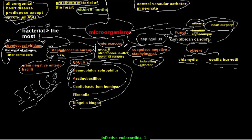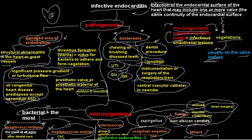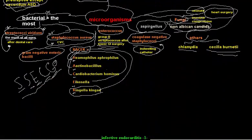To summarize: remember Streptococcus viridans, Staphylococcus aureus, Enterococcus, coagulase-negative staphylococci, gram-negative enteric bacteria, the HACEK group, non-albicans Candida, and Aspergillus. In the next videos, we will discuss the clinical manifestations of infective endocarditis, the diagnostic criteria, and the treatment and management of endocarditis.